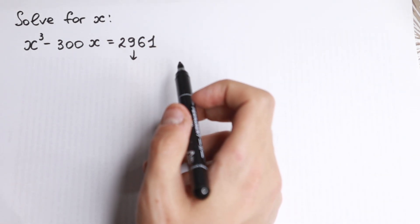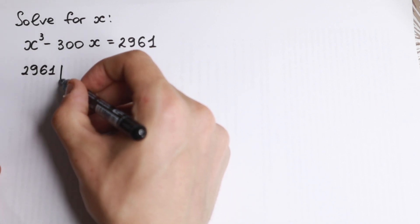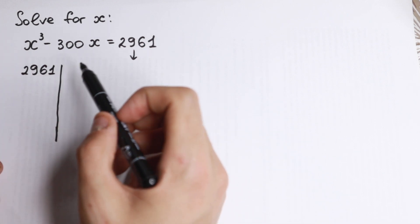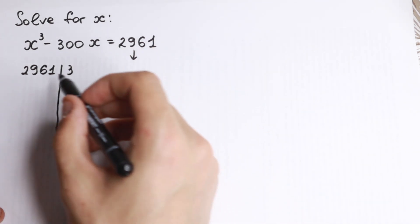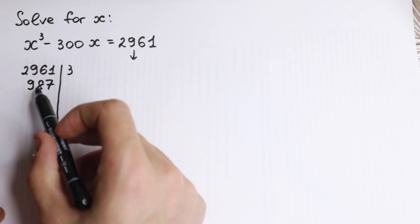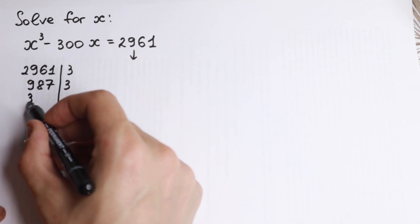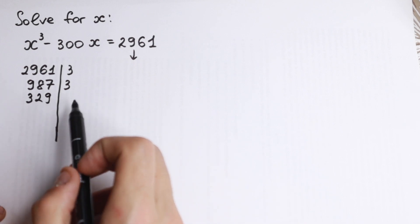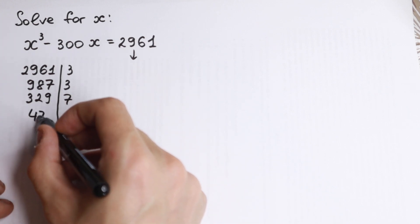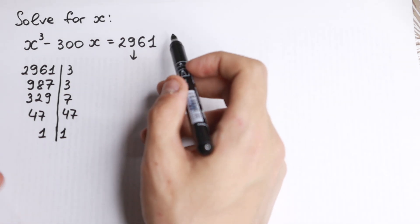First we find the factors of 2961. How can we find these factors? Take a look. If we sum all the digits: 2 plus 9 is 11, 11 plus 6 is 17... wait, 11 plus 7 is 18. So this number can be divided by 3. If we divide it by 3 we get 987. Moreover we can divide that by 3 again because 9 plus 8 plus 7 is 24, divisible by 3. If we divide step by step we get 329. And 329 we can divide by 7. If we divide by 7 we get 47. Dividing 47 by 47 gives 1. So we have factored 2961.